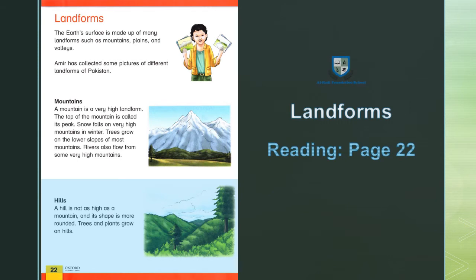Hills — Pahariyan. A hill is not as high as a mountain. Eek pahari itni oonchi nahi hoti jitna ke pahar. And its shape is more rounded. Aur is ki shakal zyada gol hoti hai. Trees and plants grow on hills. Darakht aur pauday pahariyon par ugte hain.